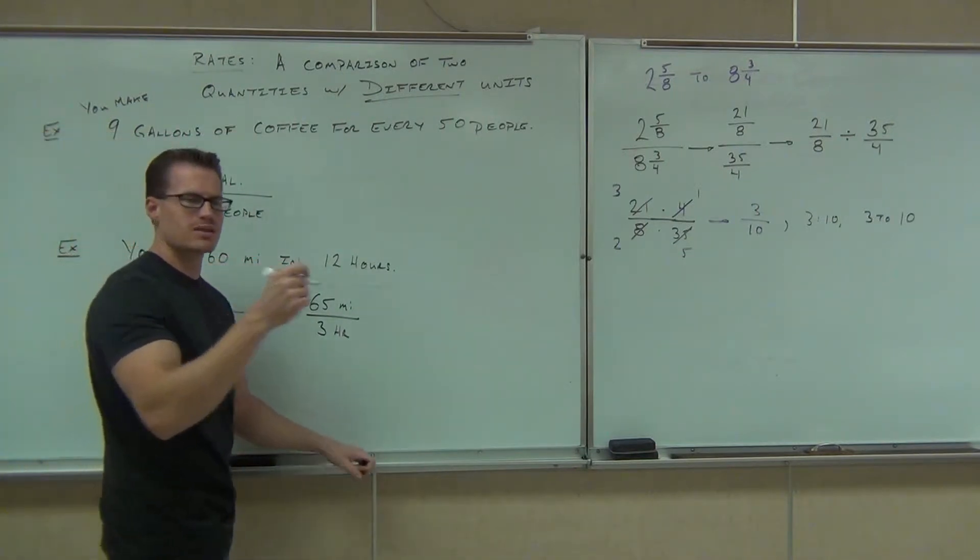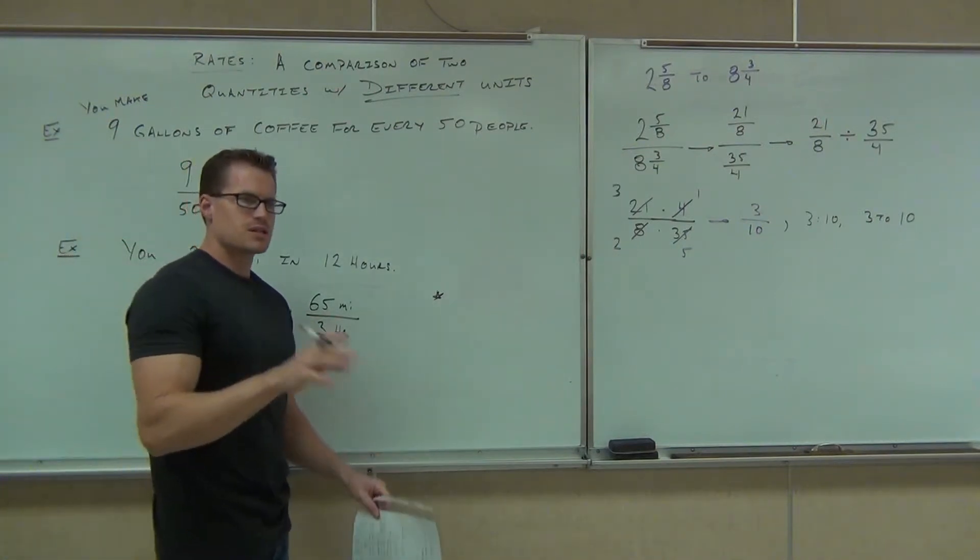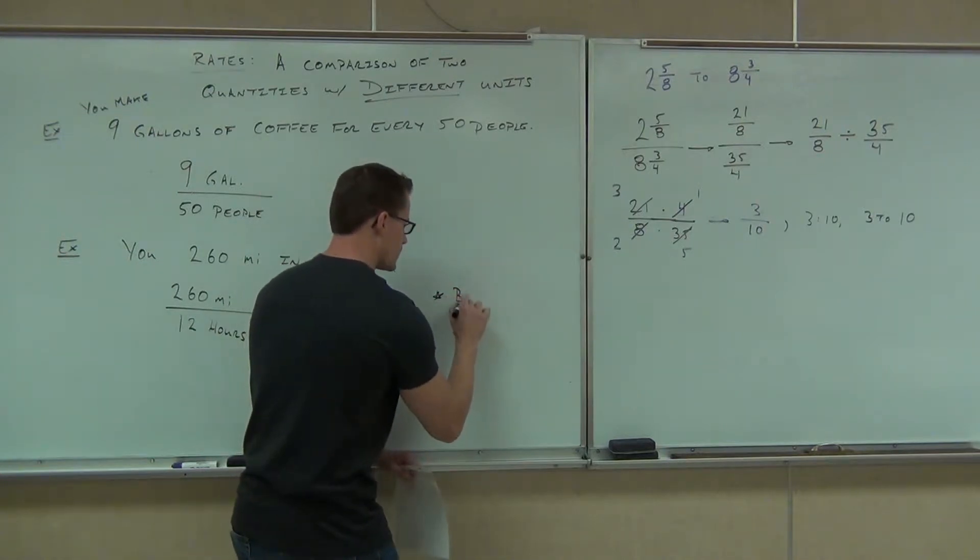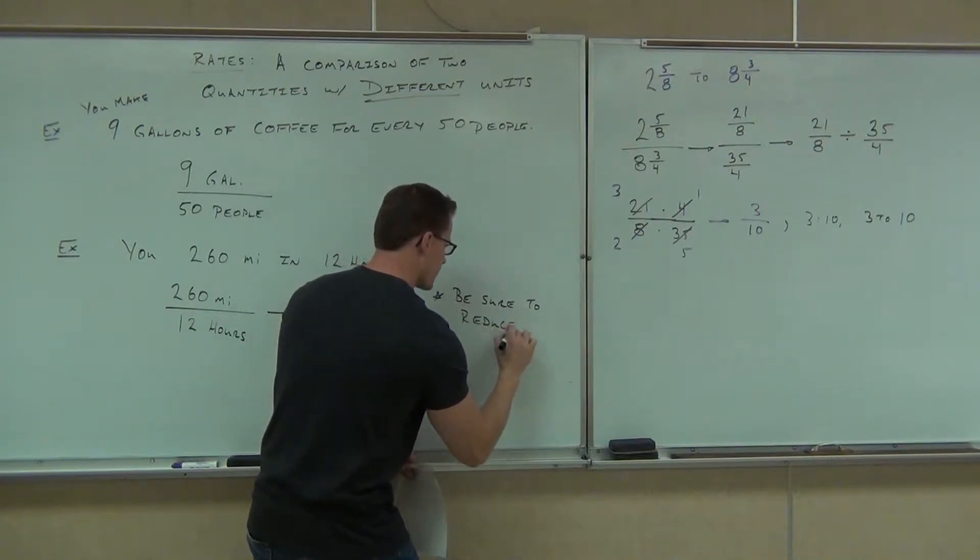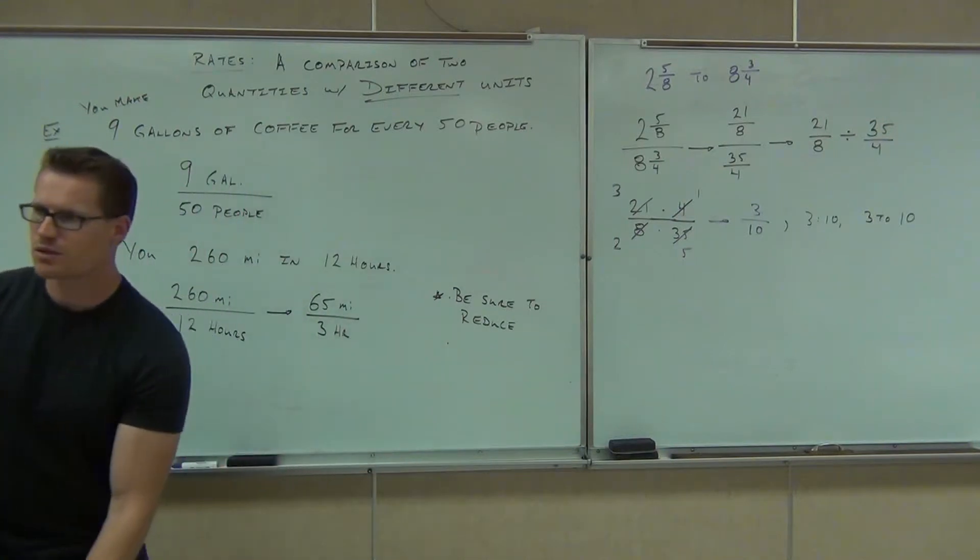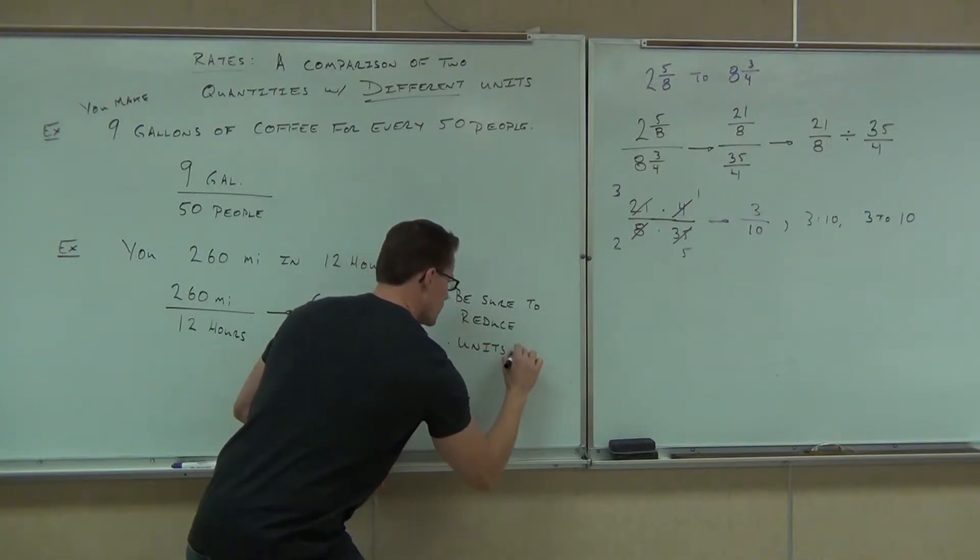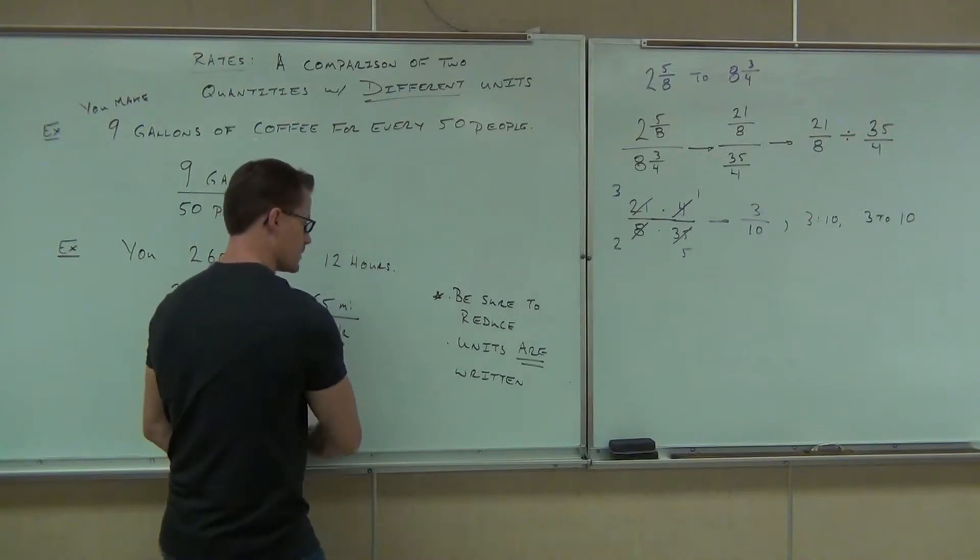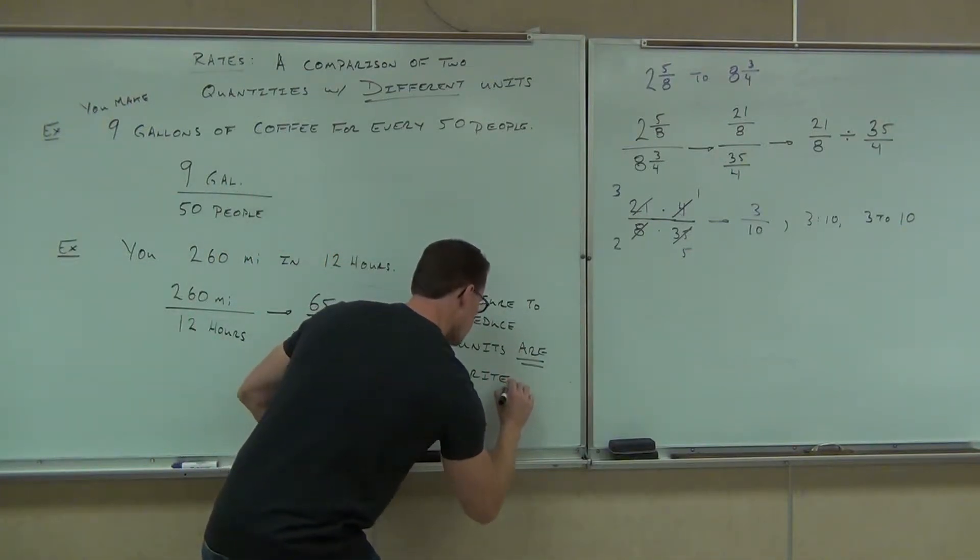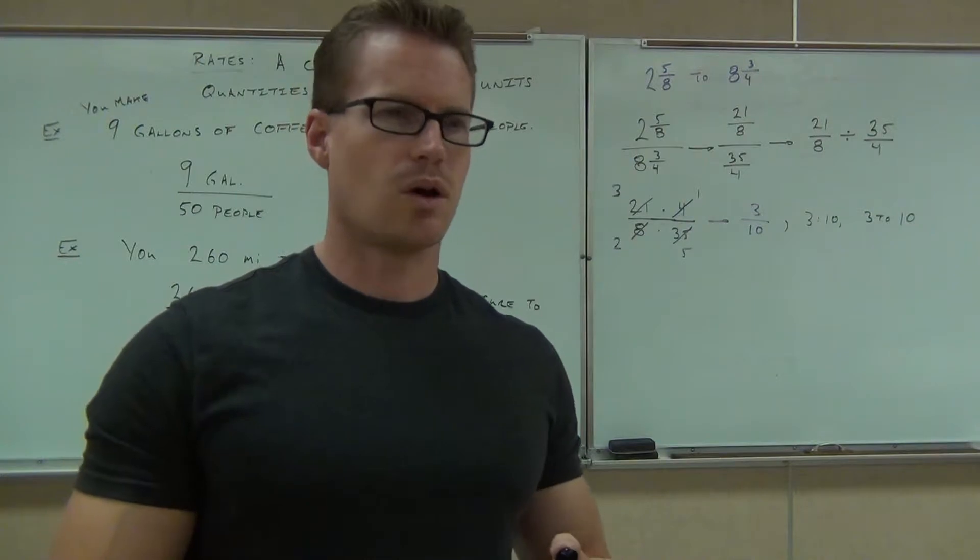We'll start that next time. The last thing I want you to write this right down, though. You're still with me, folks. You need to write down that these things can still be reduced. Okay. So be sure to reduce. And also, you absolutely must write the units when you're talking about rates. You have to. Units are written. If I can spell written. Units are written. Did you understand rates and ratios, folks? All right. How about mean median mode? Yes. Bam.